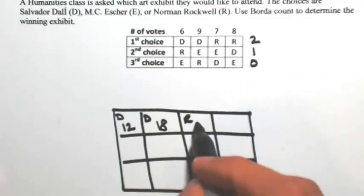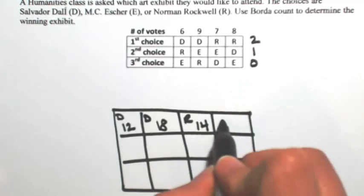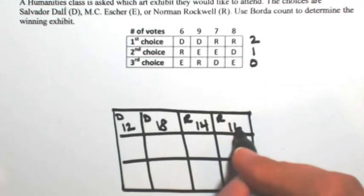R would have seven times two, which is 14. And R would have eight times two, which is 16.